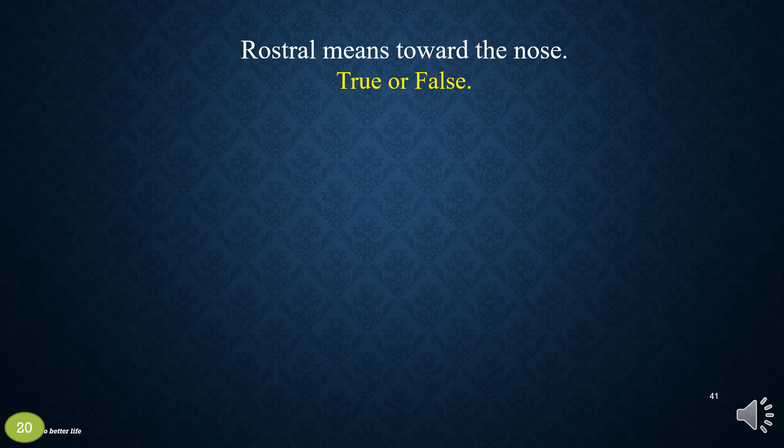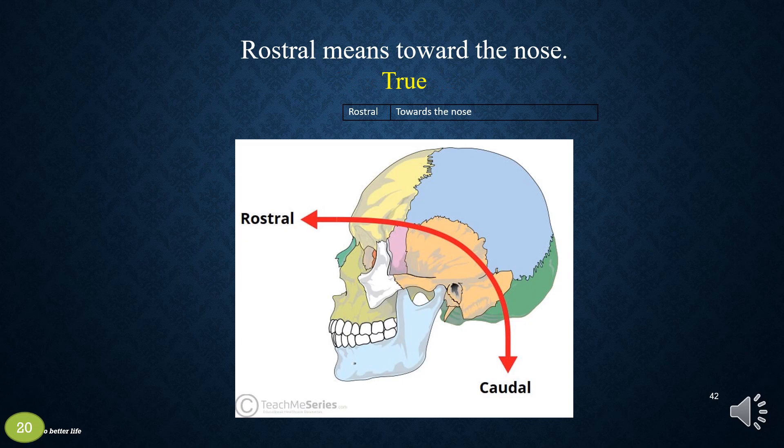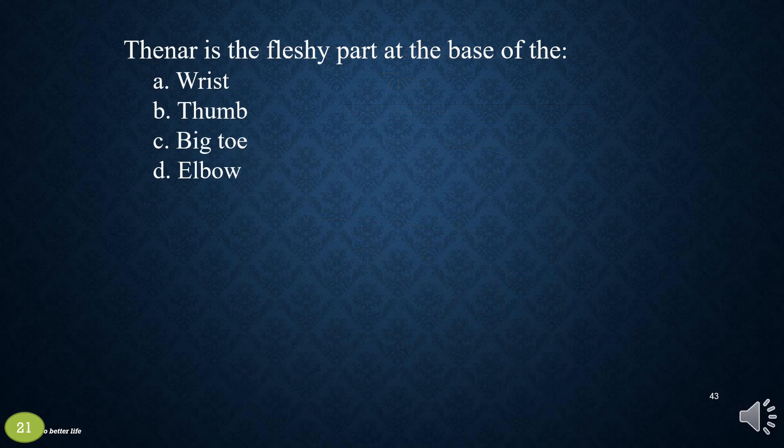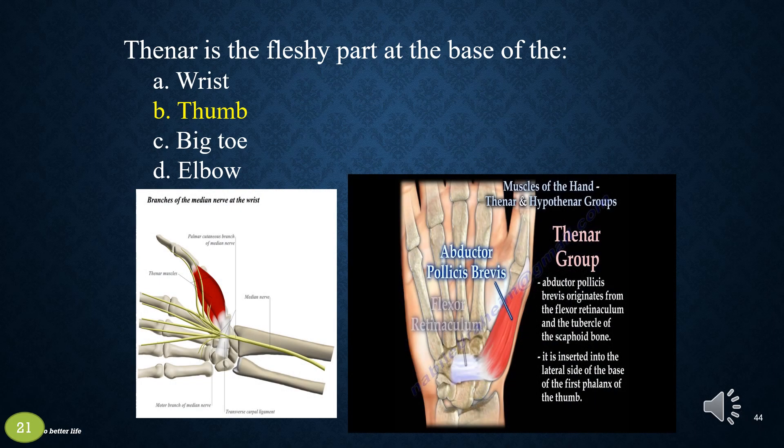Rostral means toward the nose. True or false? True. The thenar is the fleshy part at the base of the: a. Wrist, b. Thumb, c. Big toe, or d. Elbow. The answer is b, thumb.